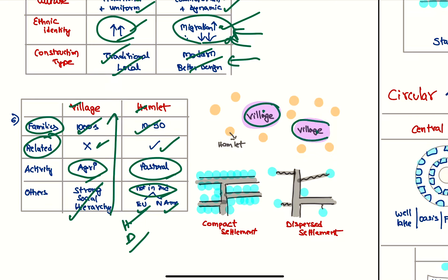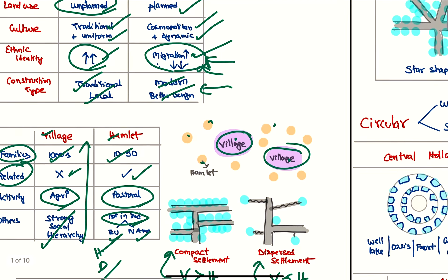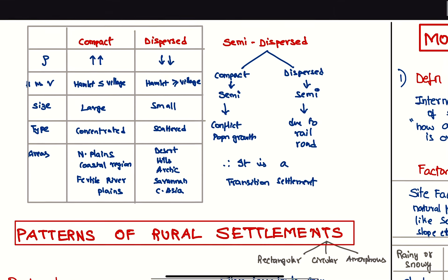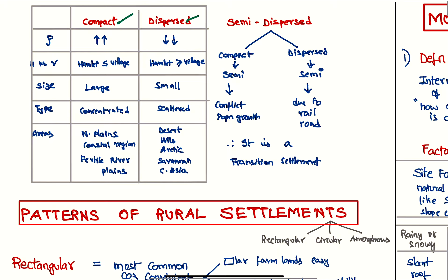Now, if number of villages are more than number of hamlets, it is a compact settlement. If villages are less than hamlets, it's a dispersed settlement. If it's in between, it is semi-compact. So the compact and dispersed comparison: density here will be high, it will be low. Number of hamlets versus villages—villages will be more, hamlets will be more. They are large inches, they are small inches. They are concentrated, and these are scattered.